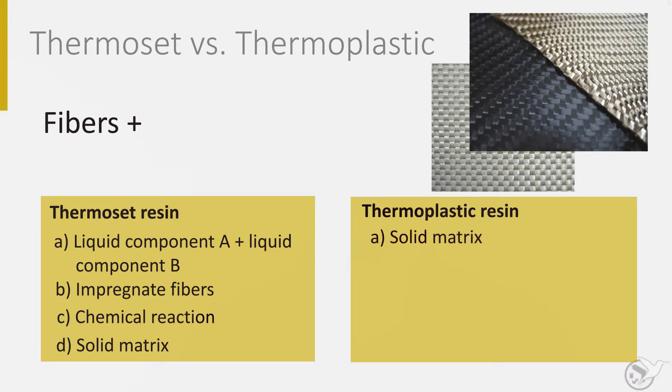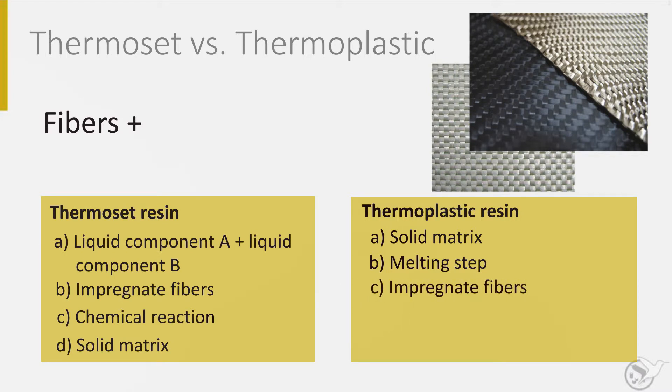Thermoplastics are solid at room temperature and don't react chemically. The long molecules in the substance can be disconnected by heating the polymer. At that temperature, the polymer and the fibers are mixed. Since the viscosity of the thermoplastic remains high, different methods are invented to get proper impregnation of the fibers. Examples are using a solvent in the polymer to lower the viscosity, mingling the fibers with thermoplastic powder, and using polymer fibers mingled with the real reinforcing fibers.